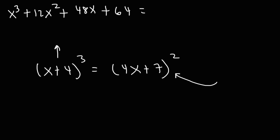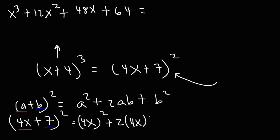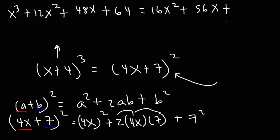Now let's expand 4x plus 7 squared. We use the formula: a plus b squared equals a squared plus 2ab plus b squared. Here a is 4x and b is 7. So a squared is 4x squared, which is 16x squared, plus 2 times 4x times 7, giving 56x, plus 7 squared which is 49.